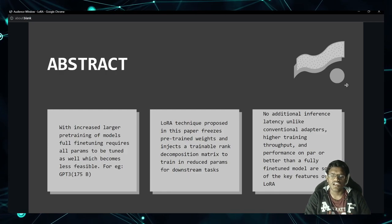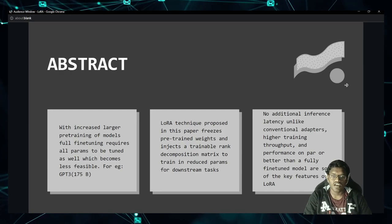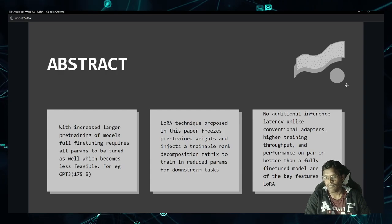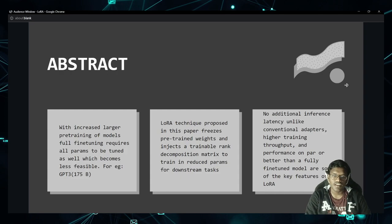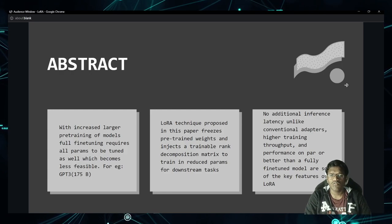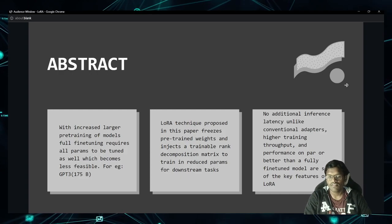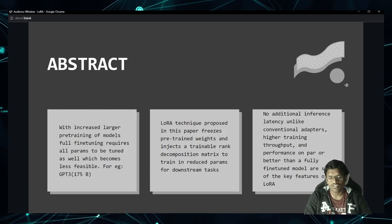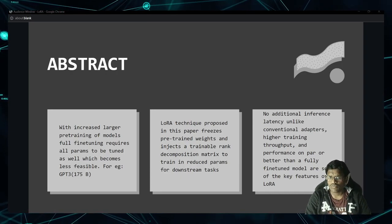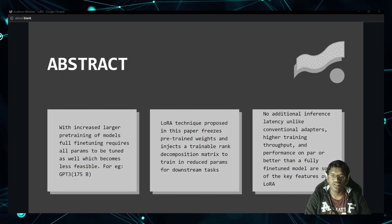What LoRA proposes is that we can freeze the pre-trained weights and inject something called trainable rank decomposition matrices, so that we can reduce the parameters for fine-tuning for downstream tasks. That is why we inject these matrices called decomposition matrices.